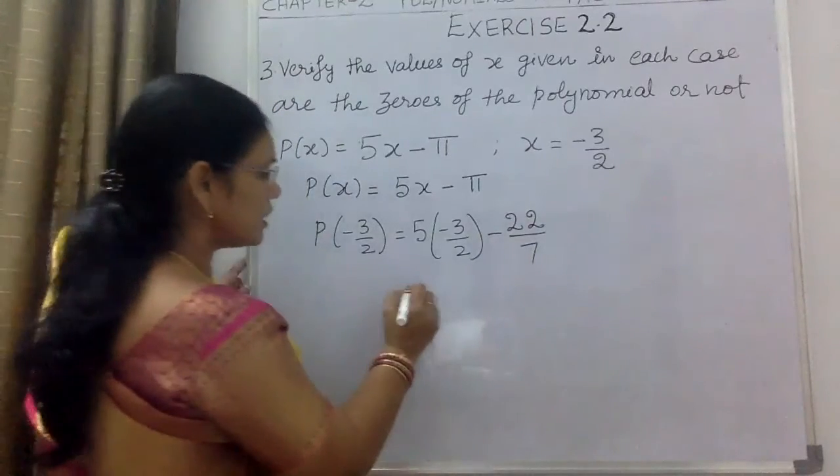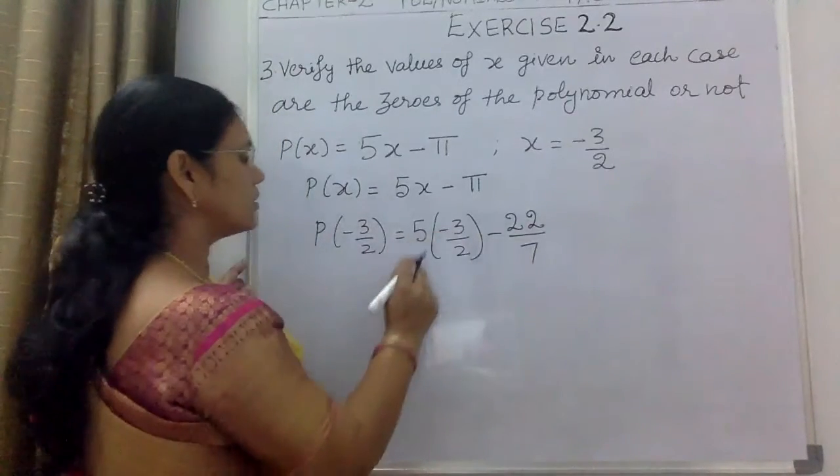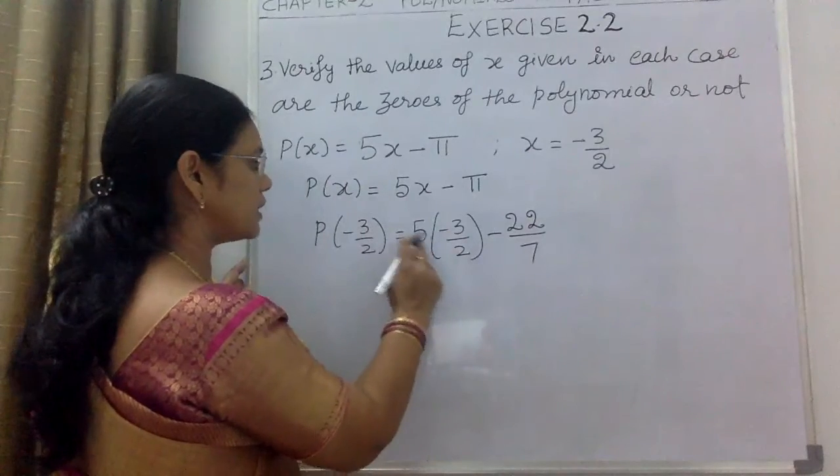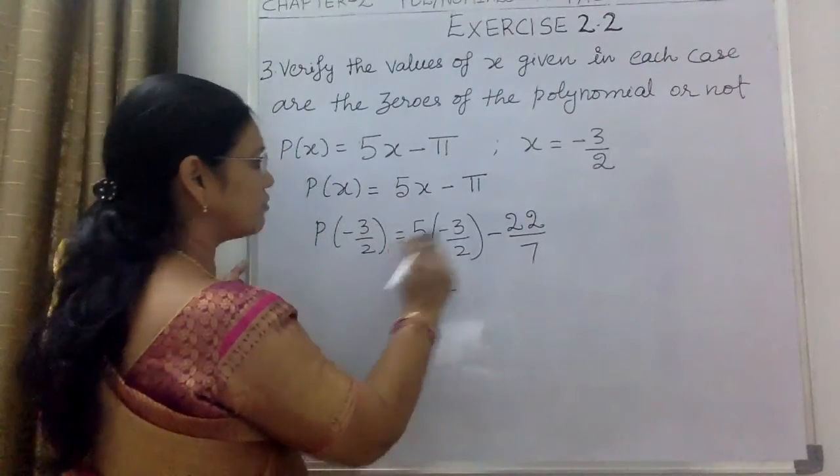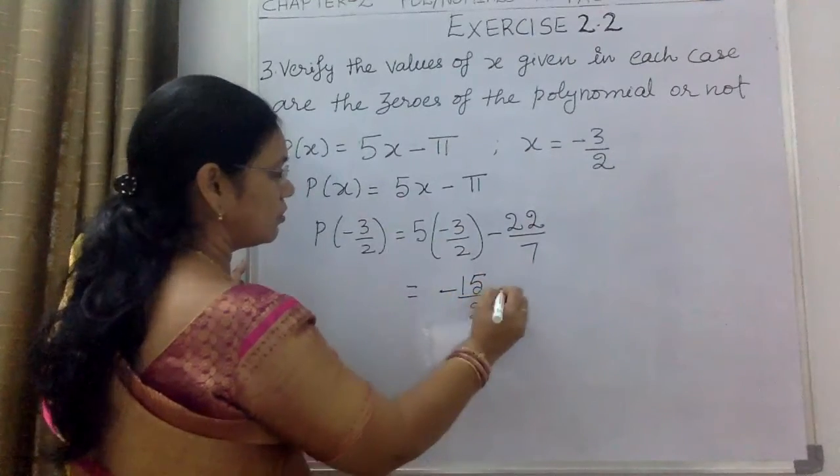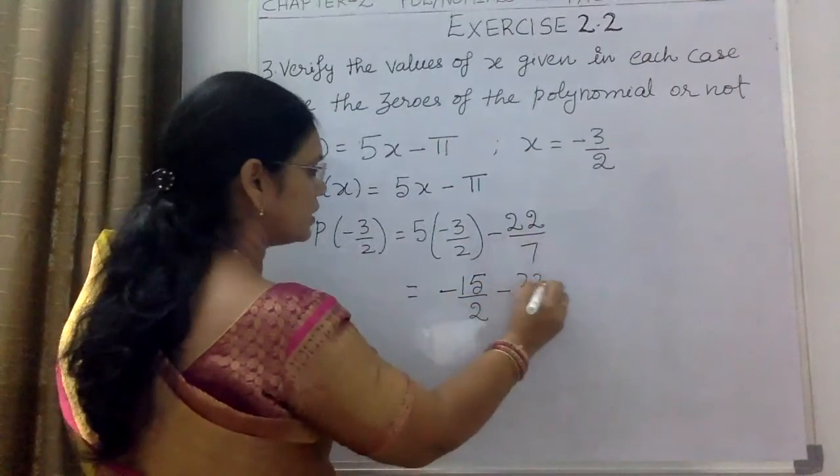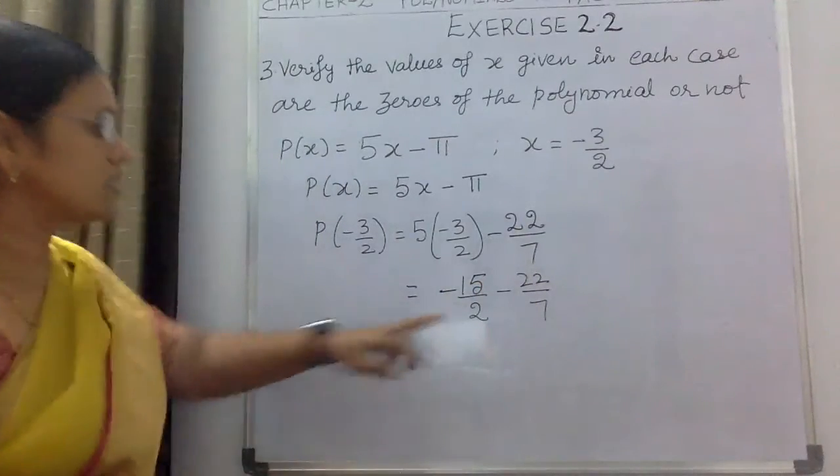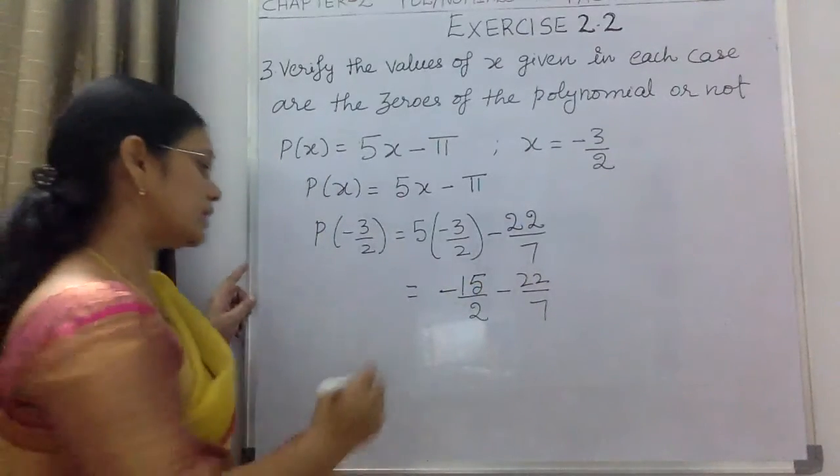Multiplying the numerators: 5 × (-3) = -15, so -15/2 - 22/7. Let us take the LCM of the denominators.